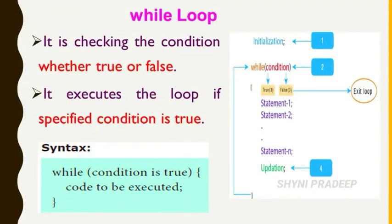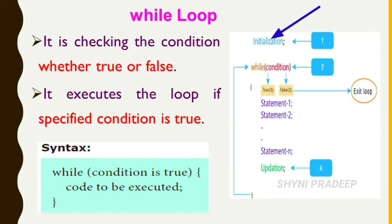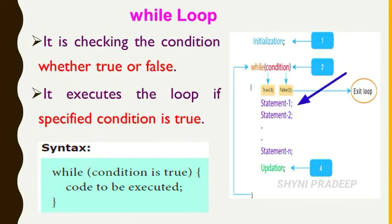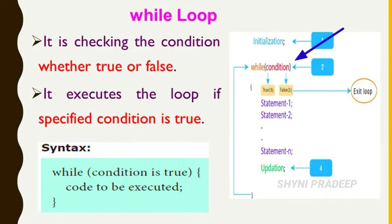Next, the while loop is used for simple iteration logics. It checks the condition whether true or false and executes the loop if the condition is true. Syntax: while(condition) { code to execute }. First initialize the variable, then write the while keyword with the condition in parentheses. If true, execute the statements, then update the control variable and repeat until the condition becomes false.